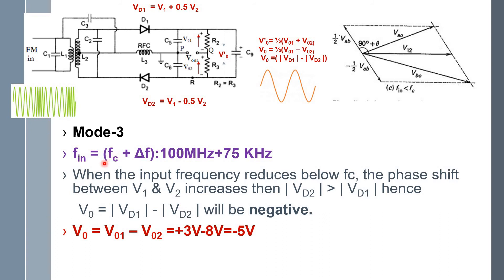Mode 3: the input signal is fc − Δf. When the input frequency is reduced below the carrier frequency, the phase shift between V1 and V2 increases, becoming greater than 90°. From the phasor diagram, VB0 is larger compared with VA0, so we conclude that the potential across VD2 is greater than VD1. The net output is therefore negative: V_output = +3 − 8 = −5 V. This concludes the three modes of operation of the ratio detector.